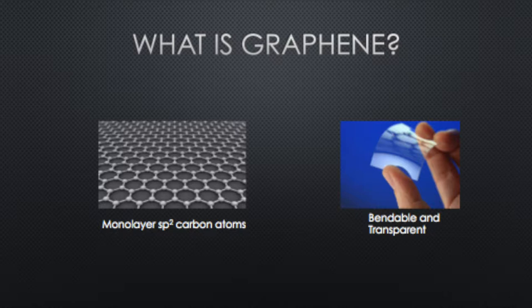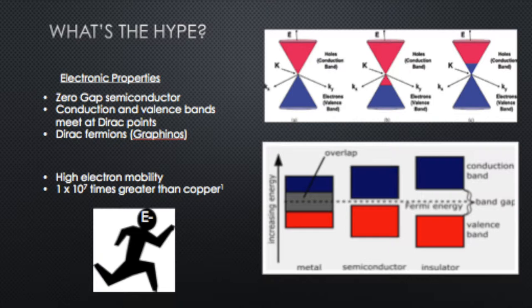Graphene is bendable and transparent, as you can see in the image on the right, and has very interesting optical and mechanical properties. So what's the hype surrounding graphene? Why are scientists, researchers, and engineers all excited about this material?